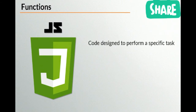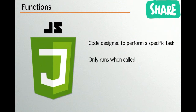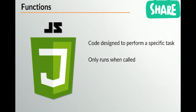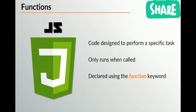A function is code designed to perform a specific task — given a pre-written set of instructions, it does exactly one thing. It only runs when called. When I used document.write, then and only then did it write information to the screen. The document.write function is already in existence — it's already prepared and just has to be called. We can create our own functions using the function keyword, which lets JavaScript know we want to declare a function.